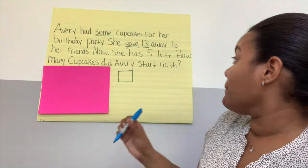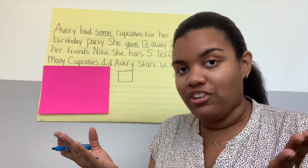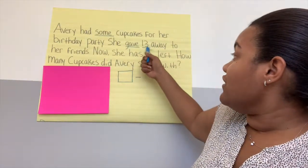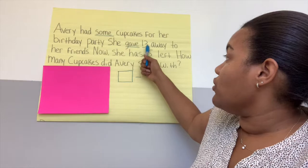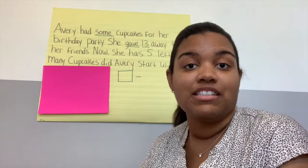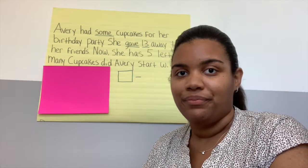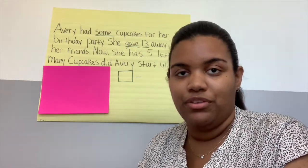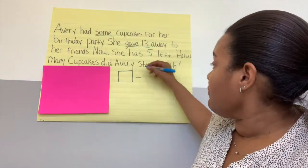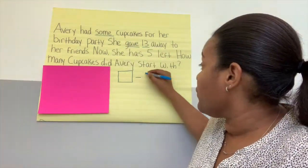Let's keep reading. So what sign should we use — will we be using addition or subtraction? Subtraction, yes. She gave 13 away. The 13 is going to be what in the problem? It's going to be our part. Because she had something and then she gave away the cupcakes, right? But we still have to figure out what that something is. We know for sure that she gave away 13 of them, so we're going to write our 13 here.